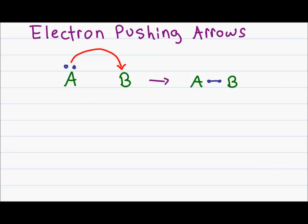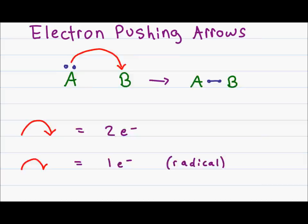You will come across two types of reaction arrows when looking at movement of electrons. The first is a double headed arrow and the second is a single headed arrow. A double headed arrow represents the movement of two electrons, which is typical in most chemical reactions. The single headed arrow represents the movement of just one electron, which is typical in radical reactions.